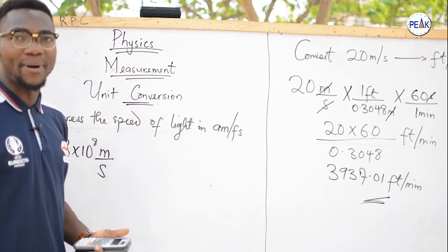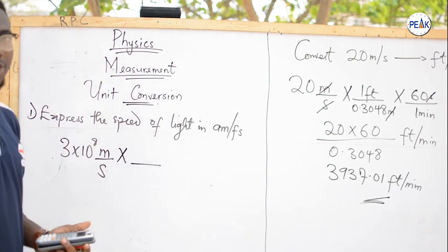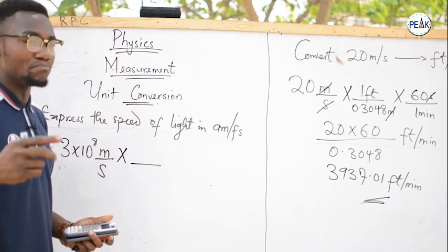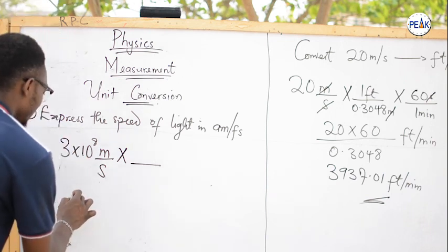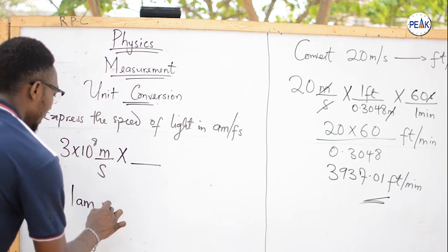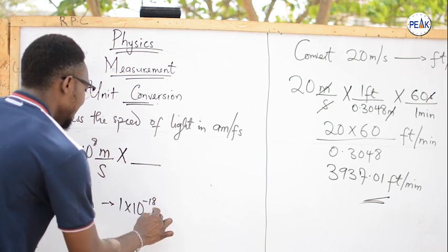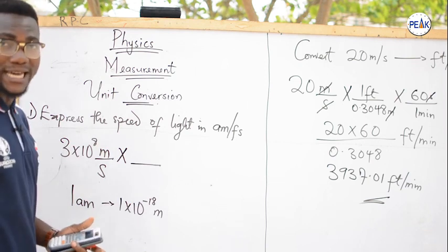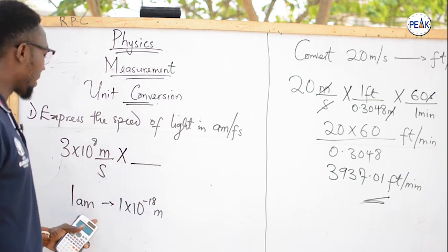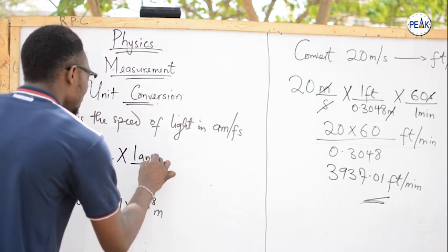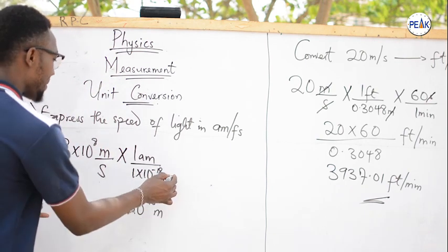Introduce your chain. Going from meters to attometers: 1 attometer equals 1 times 10 to the power minus 18 meters. To cancel meters, place meters at the denominator and attometer at the numerator: 1 attometer equals 1 times 10 to the power minus 18 meters, so meters cancels meters. Then going from seconds to femtoseconds: 1 femtosecond equals 1 times 10 to the power minus 15 seconds. To cancel seconds, place seconds at the numerator: so 1 times 10 to the power minus 15 seconds equals 1 femtosecond, and seconds cancels seconds.